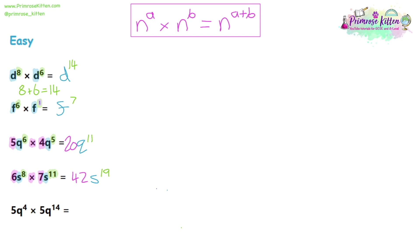For the final easy question: normal-size numbers first — 5 times 5 is 25. Second step, identify the base: Q on both sides, so write Q. Then look at the indices: 4 and 14, we're multiplying so we add the powers — 4 plus 14 is 18. So the answer is 25Q to the power of 18. In summary: the pink step deals with normal numbers first; the blue step identifies the base letter; and the third step looks at the powers and applies whichever index rule we're using.